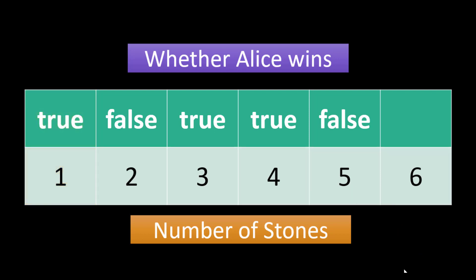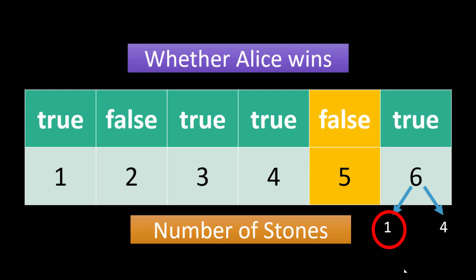Now with 6 stones, Alice can make 2 operations: take 1 stone or take 4 stones. If she takes 1 stone, she leaves behind 5 stones and Bob starts first. At 5 stones, whoever starts first will lose the game — that means Bob loses. As Bob loses, Alice will win the game. We have found one case where Alice can win, so we put true at this index and we need not calculate further.